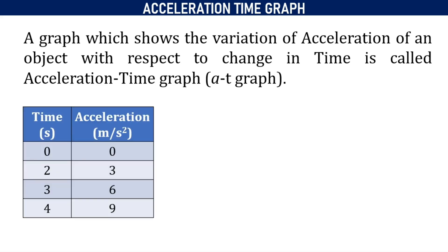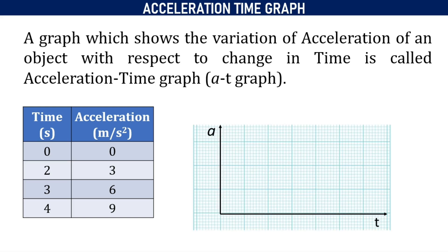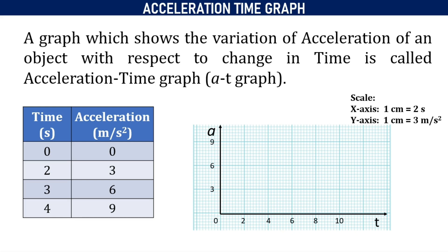With the help of the following readings, we are going to find out how to draw the AT graph based on the readings. We fix the scale: on the x-axis, 1 centimeter is equal to 2 seconds; on the y-axis, 1 centimeter is equal to 3 meters per second squared. Accordingly, we mark the graph. Then we mark the points according to the readings given in the table.